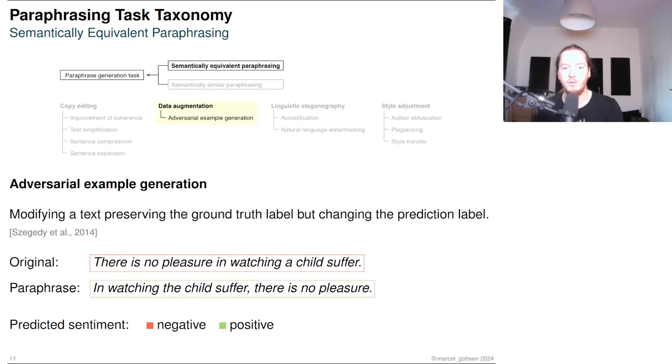Adversarial example generation is a data augmentation task to generate particularly hard examples for a specific task by modifying a text such that a ground truth label would be preserved but the prediction of a model would change. The example is taken from a sentiment classification task. Both the original and the paraphrased text exhibit a negative sentiment but the model predicts a positive sentiment. The meaning should be retained in this task, which makes it a paraphrasing task.